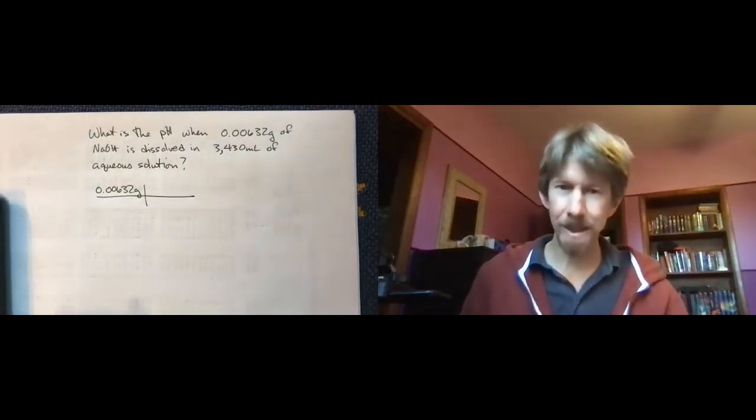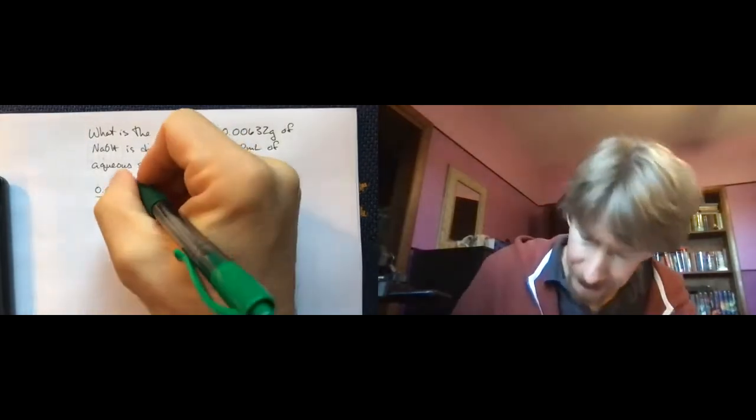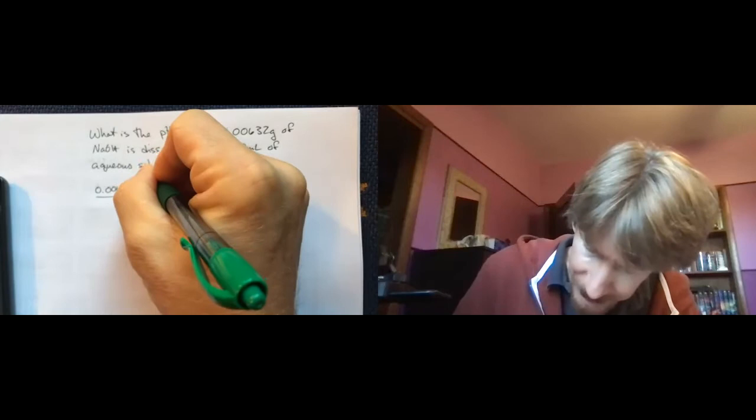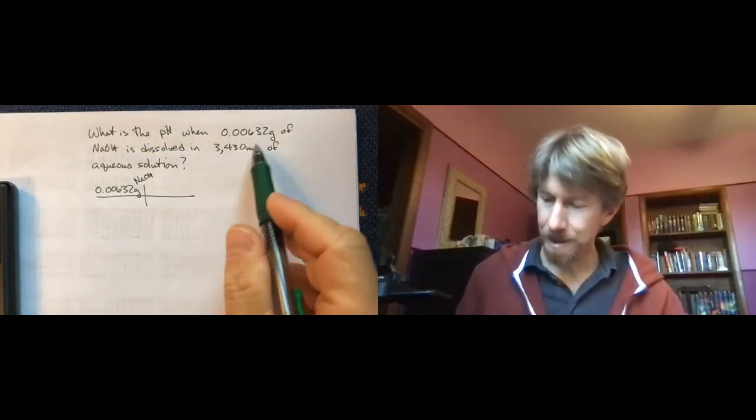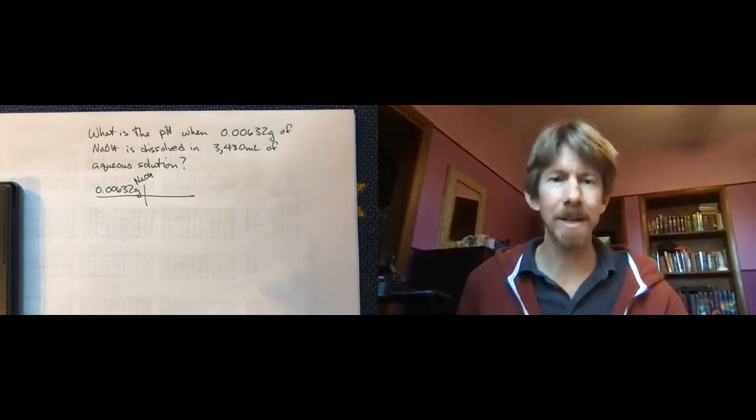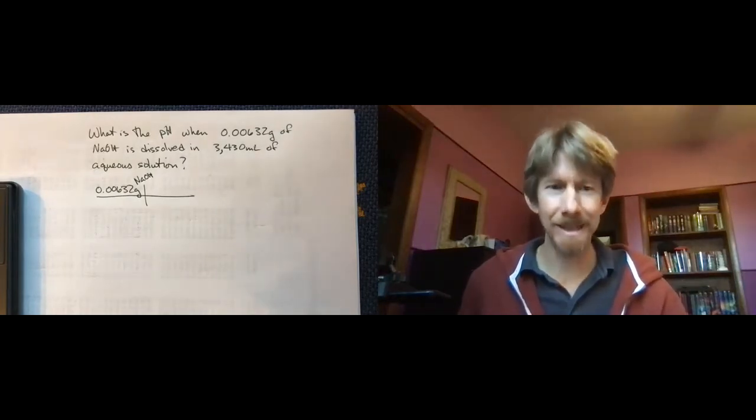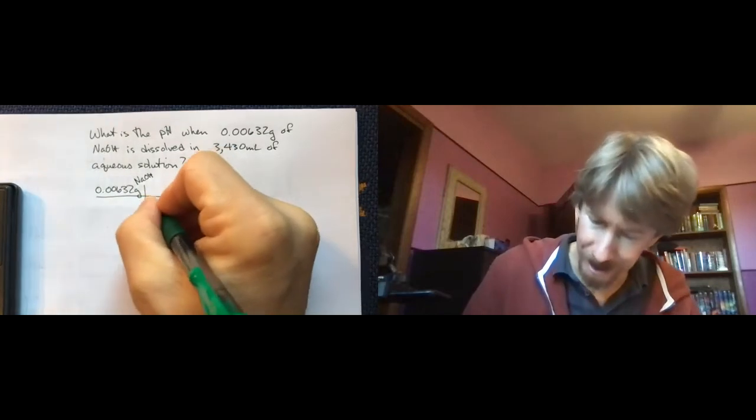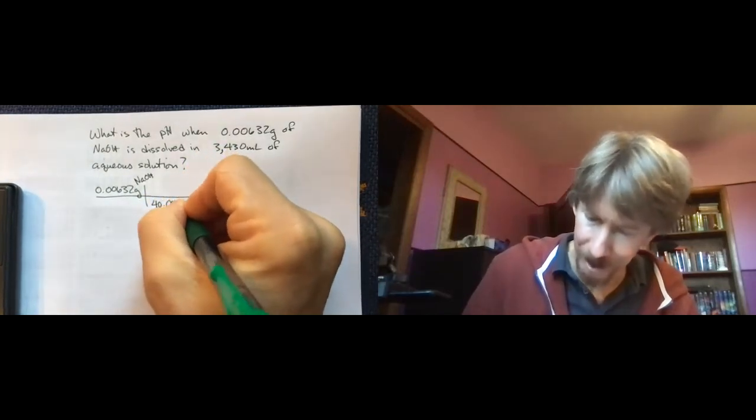I know that grams sodium hydroxide is going to be, let's see, 22.99 plus 16 plus 1.008, 39.998 grams per mole. I'm going to round to 40.00 grams.